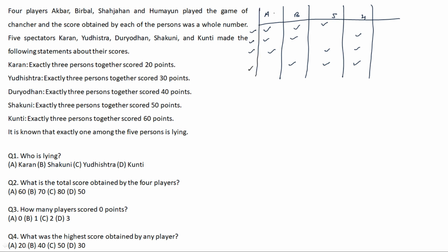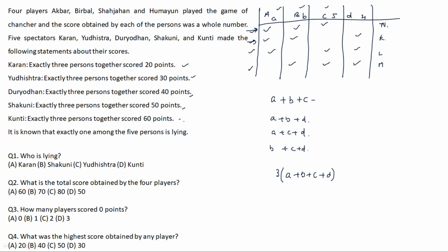If we represent the 4 players as a, b, c, d, then the 4 combination sums are: a+b+c, a+b+d, a+c+d, and b+c+d. Adding all four gives 3(a+b+c+d). The five spectators' claimed sums are 20, 30, 40, 50, and 60. Adding all five values: 20+30+40+50+60 equals 200. So the total of all 5 statements is 200.